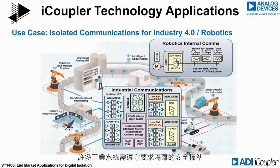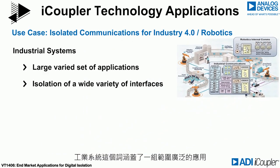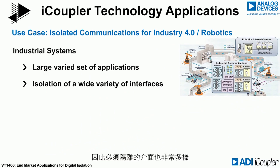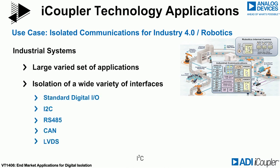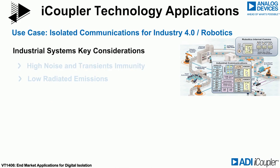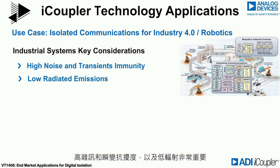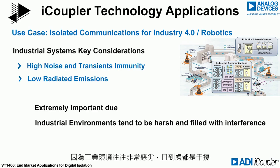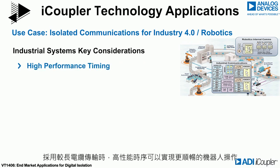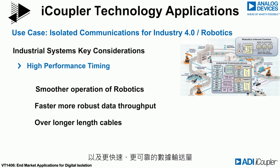Many industrial systems are subject to safety standards that require isolation. The term industrial systems covers a large and varied set of applications, which leads to a wide variety of interfaces that must be isolated. These include standard digital I/O, I2C, RS-485, CAN, and LVDS, to name a few. High noise and transient immunity as well as low radiated emissions are important because industrial environments tend to be very harsh and filled with interference. High performance timing leads to smoother operation of robotics and faster, more robust data throughput over longer cable lengths.